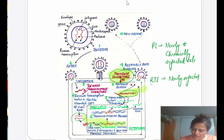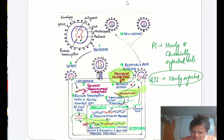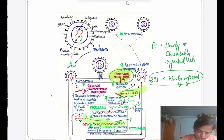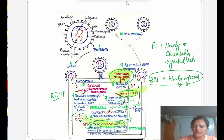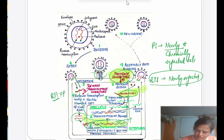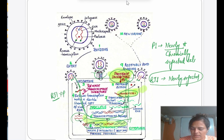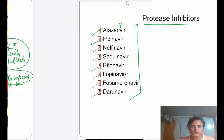The reason: if reverse transcription and integration have already happened in a chronically infected cell, giving an RTI will be of no use — the provirus is already integrated. But protease inhibitors act at a later stage, so they are effective even in chronically infected cells. With this, viral replication is strongly inhibited. We have eight protease inhibitors available.